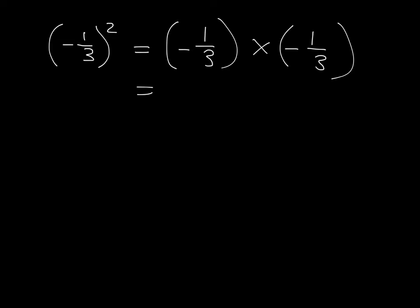And then one third times one third. Well, how do we multiply fractions? We multiply the top, we multiply the bottom. So one times one is one. Three times three is nine.